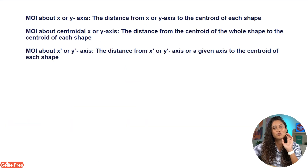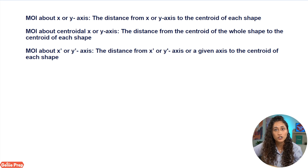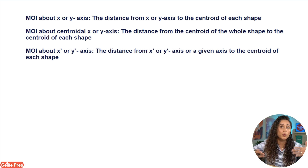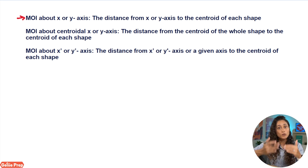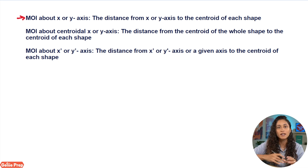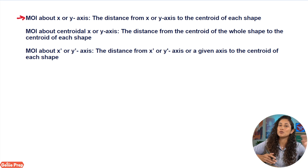Before we end this video, I want to summarize DY for the three different types of moment of inertia, because a lot of people are confused about DY and DX. If the question asks you to find the moment of inertia about the X or Y axis and you are using the parallel axis theorem, DY or DX is the distance from the X or Y axis to the centroid of each shape — just like we did for shape two in this problem.